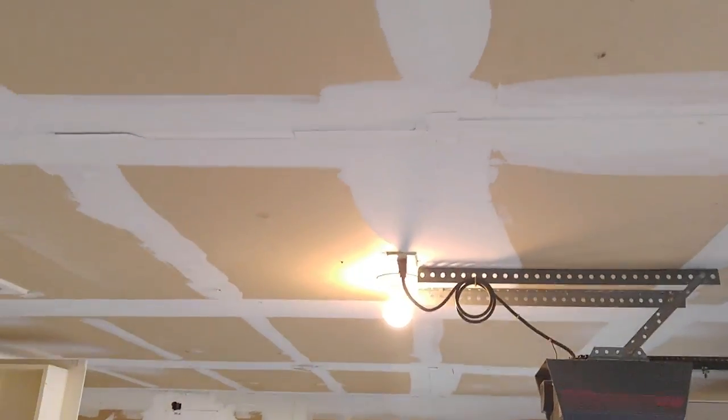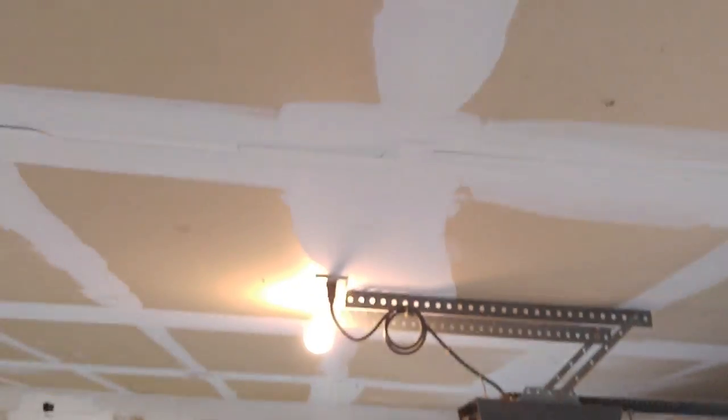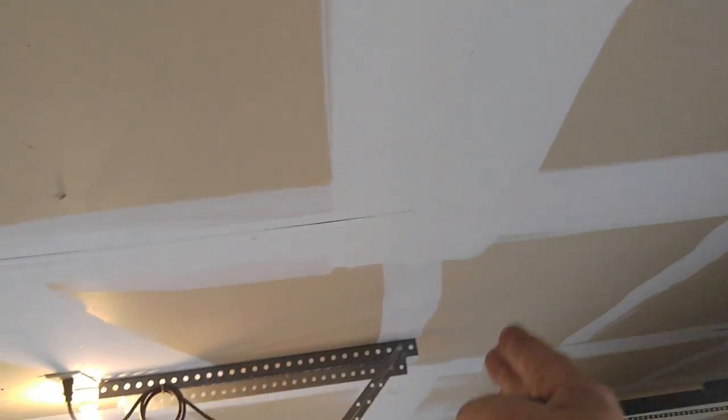All right guys, so you want to find out where your ceiling joist is. If you have an unfinished ceiling in here like this garage, it's really easy to see because you can see the screws going in a line all the way down. So our ceiling joist is going this way. Look over here, it's going this way.